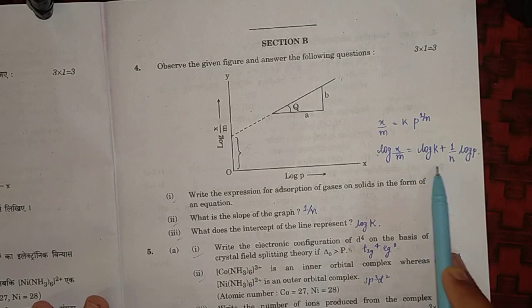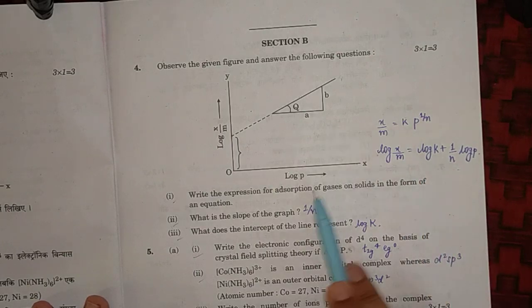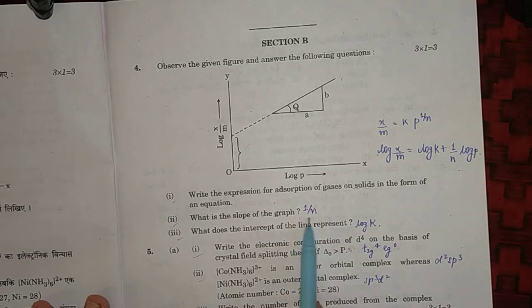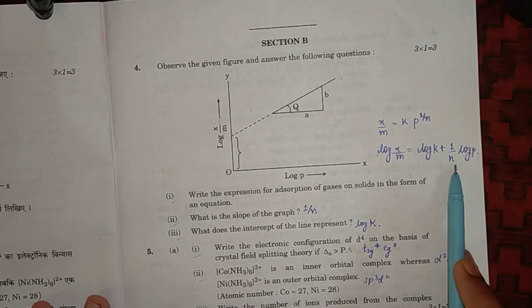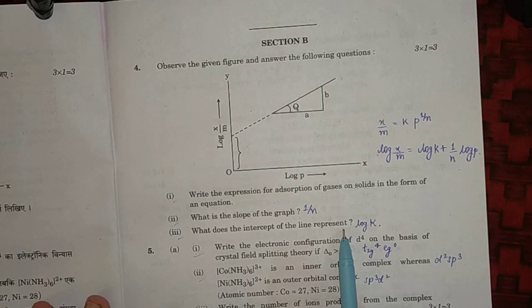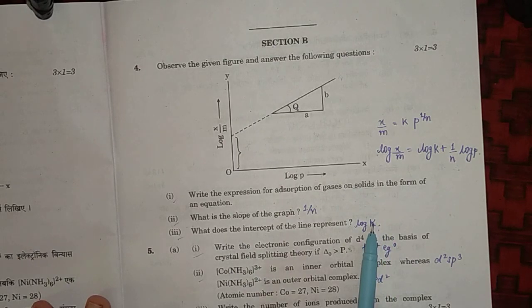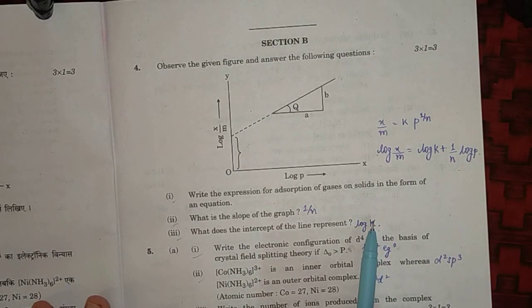What is the slope of the graph? The slope of the graph will be 1/n. And what does the intercept of line represent? It represents log k. Here k denotes the constant value which is different at different temperatures for different adsorbate and adsorbent.